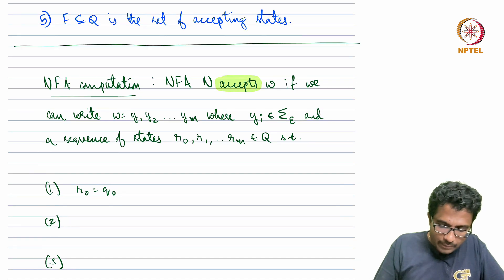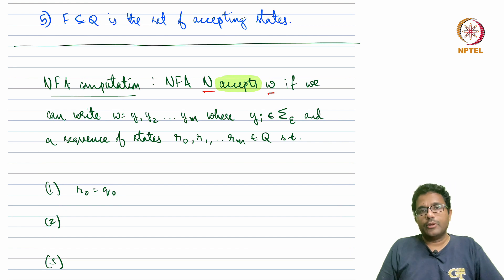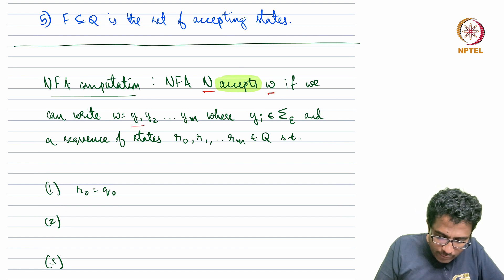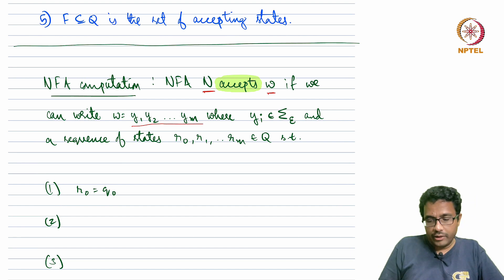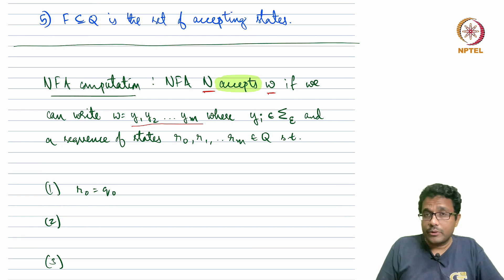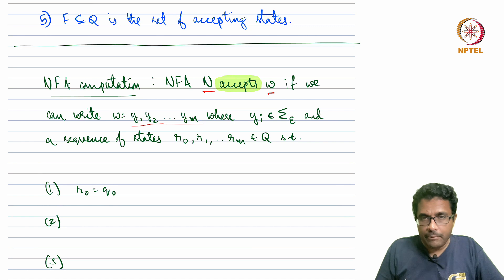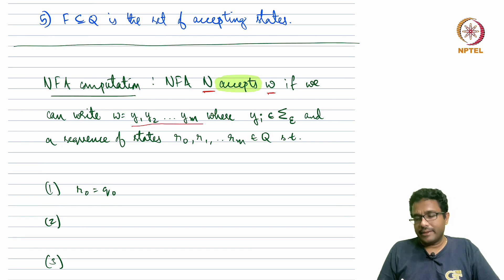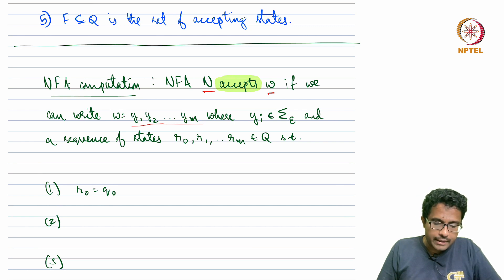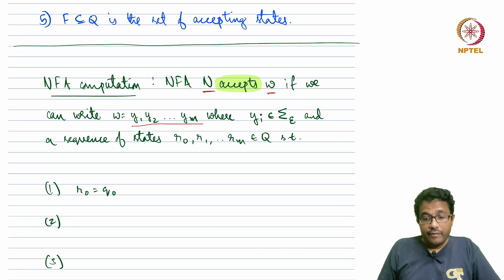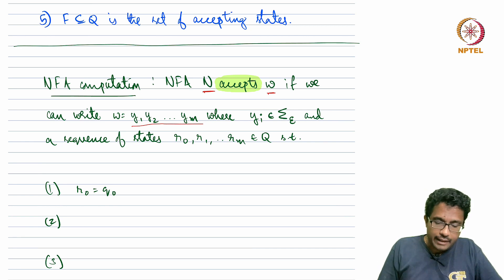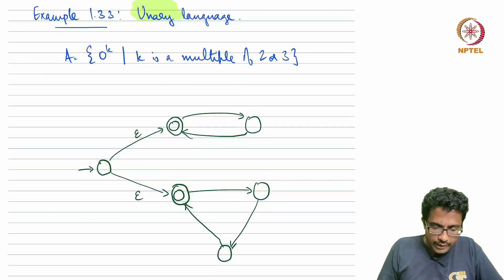We say that NFA N accepts string w if we can write w as y1, y2, y3 up to ym. Notice I am using y instead of w and m instead of n for the length, because we are not splitting w purely into individual symbols — there may also be empty symbols inserted in between. The yi's are not just alphabet symbols; they could also be epsilon. That is why yi's come from sigma-subscript-epsilon.